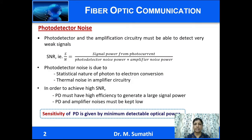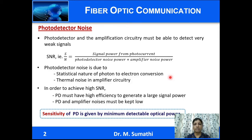When light or photons are incident on a photodiode, photocurrent is generated. The photodetector and associated amplifier circuitry must be able to detect even very weak signals. The signal-to-noise ratio (SNR) is given by signal power from photocurrent to the photodetector noise power and amplifier noise power. The photodetector noise is mainly due to the statistical nature of photon-to-electron conversion, because the power of the photon varies, the number of electrons generated is random, and there is also electron recombination and secondary emission.